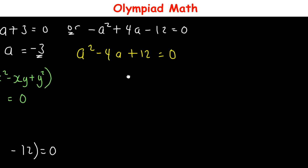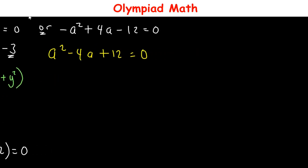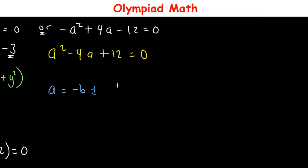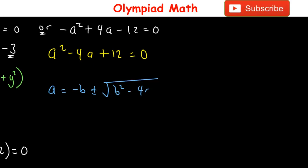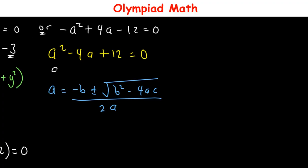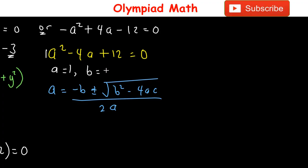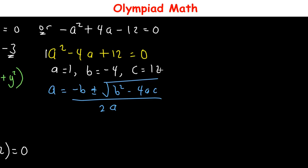To solve a² - 4a + 12 = 0, we use the quadratic formula: a = (-b ± √(b² - 4ac)) / 2a. Here, the coefficient of a² is 1, the coefficient of a is -4, and the constant is 12.